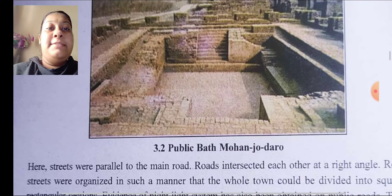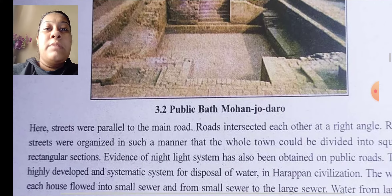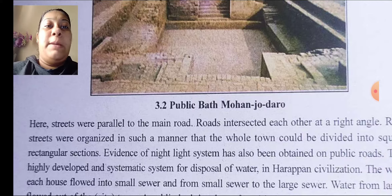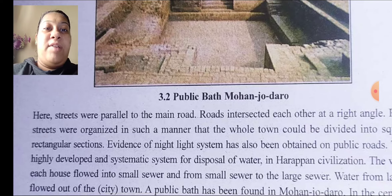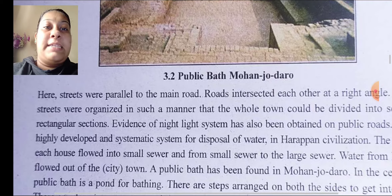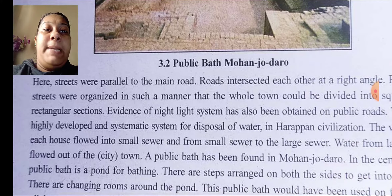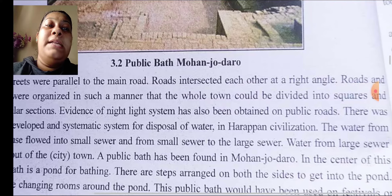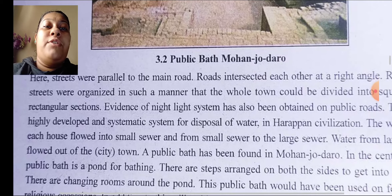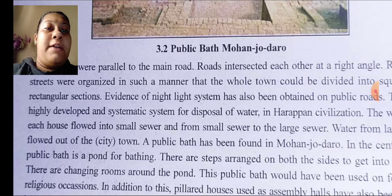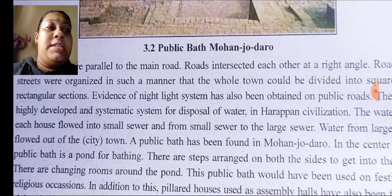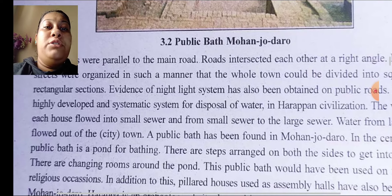This is an example of the public bath of Mohenjo-daro. Streets were parallel to the main road and roads intersected each other at right angles. Roads and streets were organized so that the whole town was divided into square and rectangular sections. Evidence of a night lighting system has also been found on public roads. There was a highly developed and systematic drainage system for disposal of water — water from each house flowed into small sewers and then into large sewers.